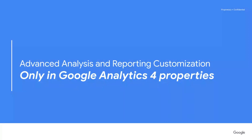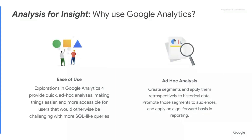Let's look at a few things that are only available in Google Analytics 4 properties. First, we have analysis for insight. Explorations in Google Analytics 4 provide quick ad hoc analysis, and it makes things easier and more accessible for more users, who would otherwise need to use SQL-like queries to analyze that data. It also provides ad hoc analysis where you can create segments and apply them retrospectively to historical data. You can promote those segments to audiences and apply them on a go-forward basis.